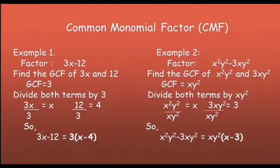Common Monomial Factor, or CMF. Example number 1: factor 3x minus 12. Find the GCF of 3x and 12. Their GCF is 3 because 3 can divide both 3 and 12. Now, divide both terms by 3.